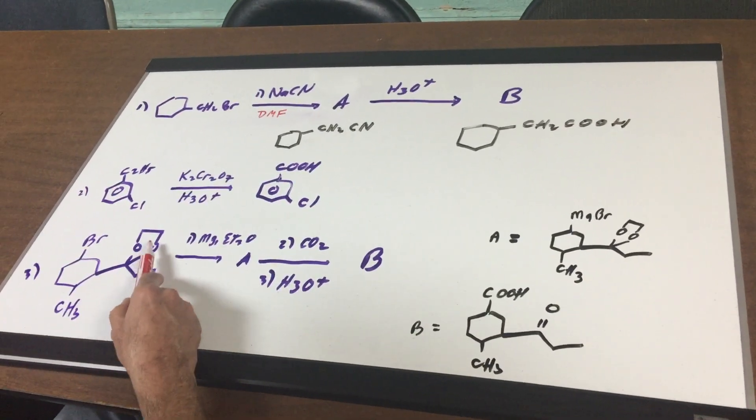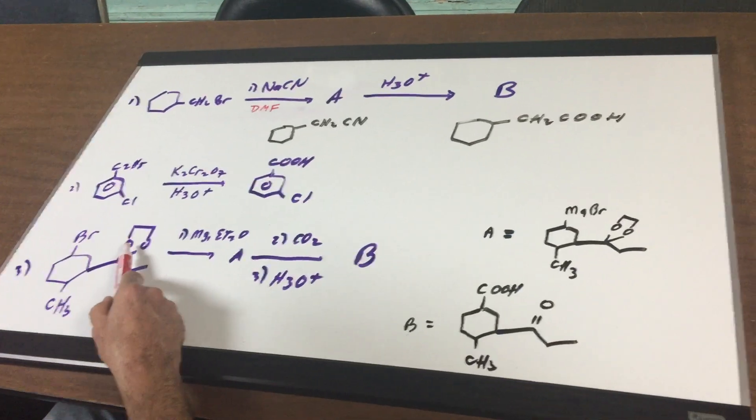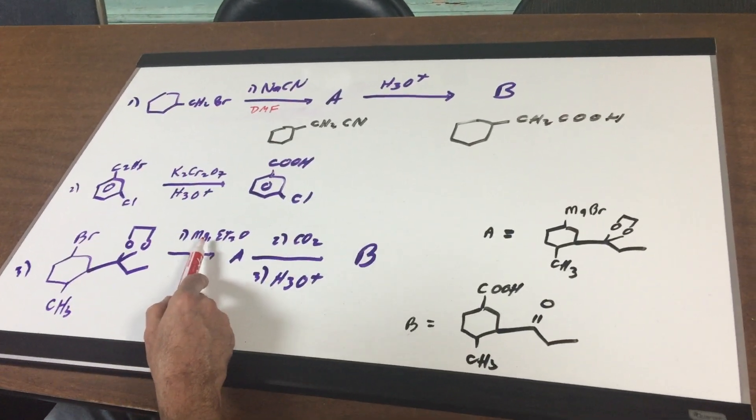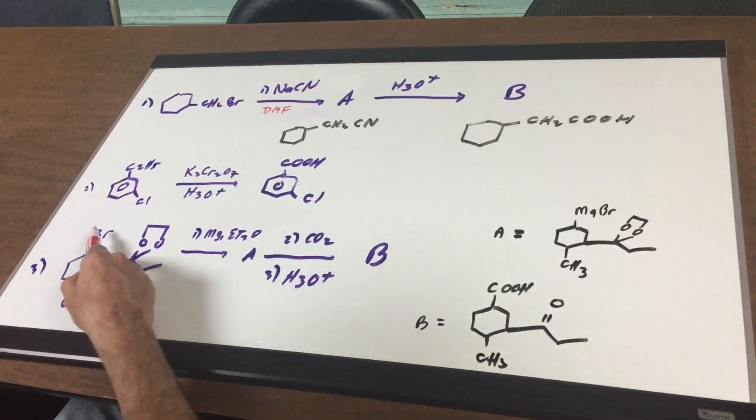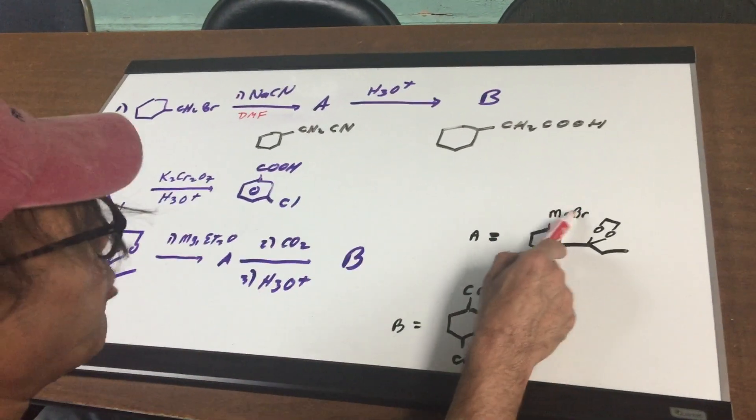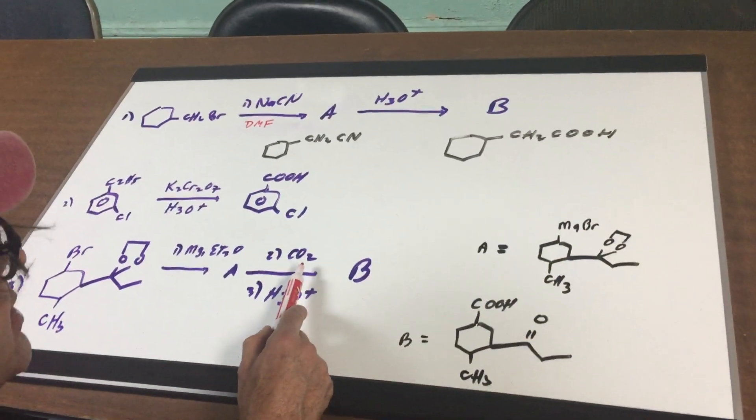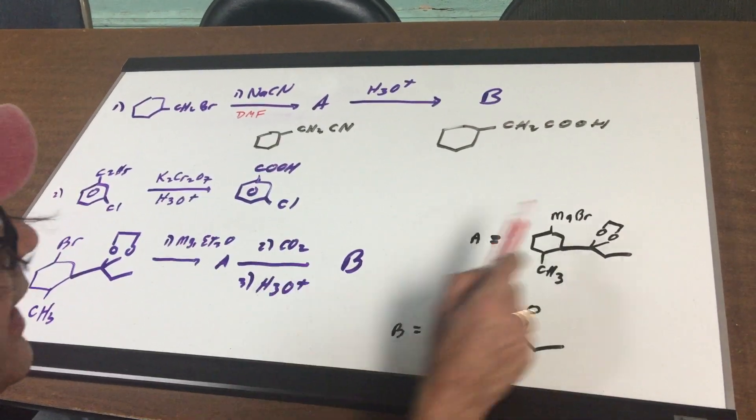Number three, this is a protecting group. And I'll talk more about that in a second. The grignard will first form and you would get A. So you would get the MgBr. When you add CO2 to a grignard and acid,